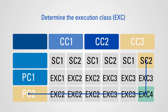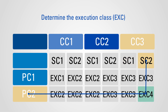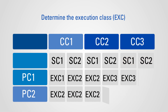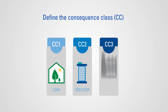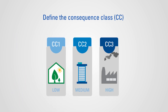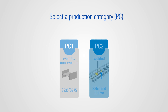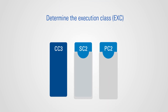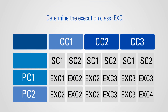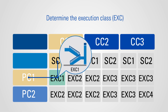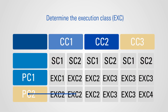Selecting the right execution class to apply for is important, as it determines what you can supply to the market. Your products will be categorised based on what they can or will be used for. Buildings or structures for industrial plants, for example, have a high consequence of failure, are under frequent stress, and must be made up of higher steel grades. So it is important to decide which execution class you are applying for, as it determines how much of the market you have access to.